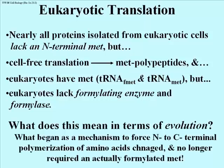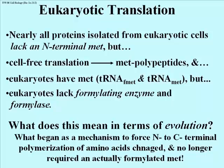So what does this mean in terms of evolution? It was no longer necessary to physically formylate the initiator methionine on its initiator tRNA, because by that time many other components of the process of translation initiation had been well established, and it was no longer required to physically block the amino terminus. That's the speculation to explain why in eukaryotes, selection led to the elimination of the formylating enzyme and the formylase. But eukaryotes still have the specific initiator tRNA sub-F-met, and methionine is always the first amino acid in a polypeptide chain — that's a relic of evolution.